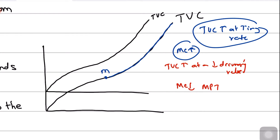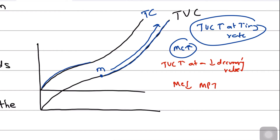Remember that all marginal costs are variable, so the change in total variable cost is basically the marginal cost. The slope of the total cost represents marginal cost — and I should correct an error here: this should be total cost, not total variable cost. The slope of the total variable cost also represents marginal cost because the shape of the total cost curve follows exactly the shape of the total variable cost curve.